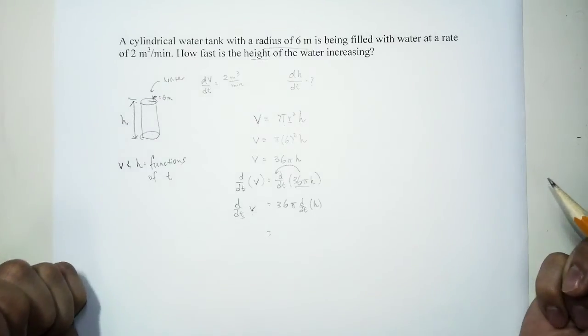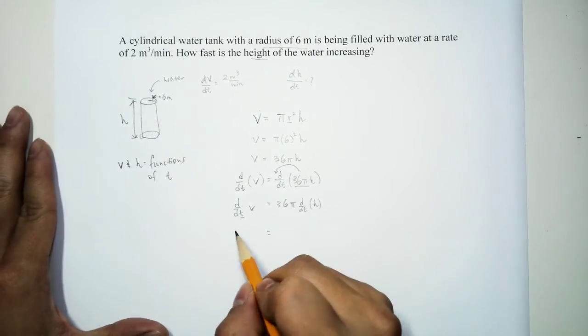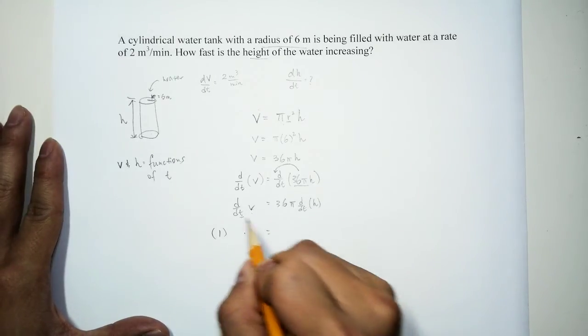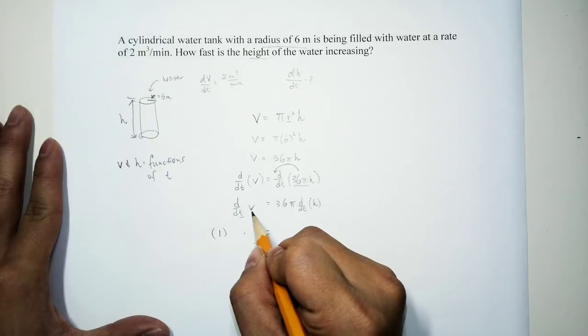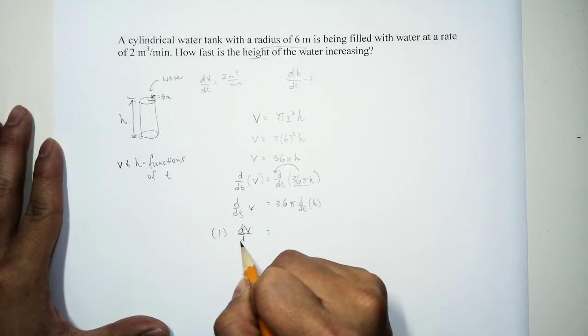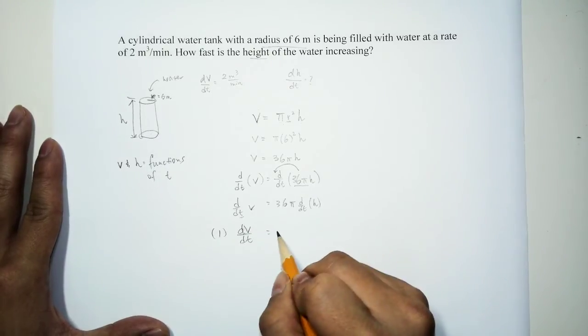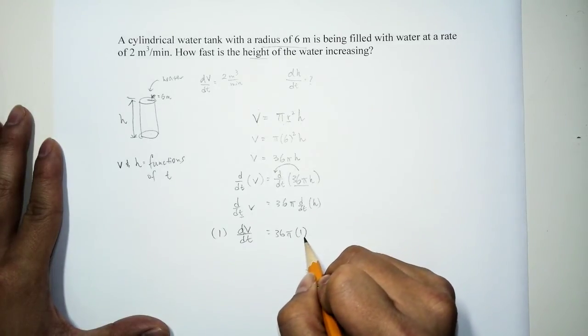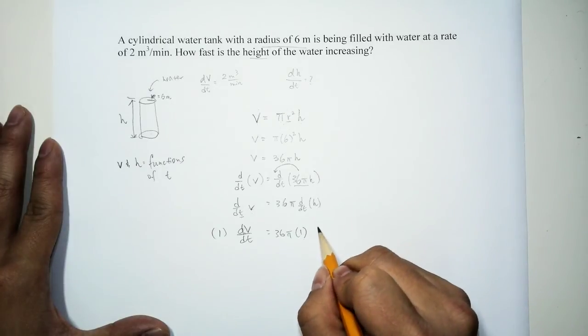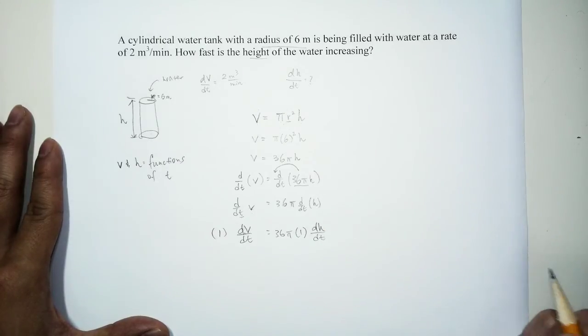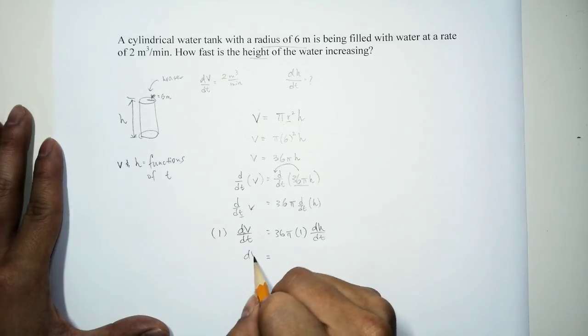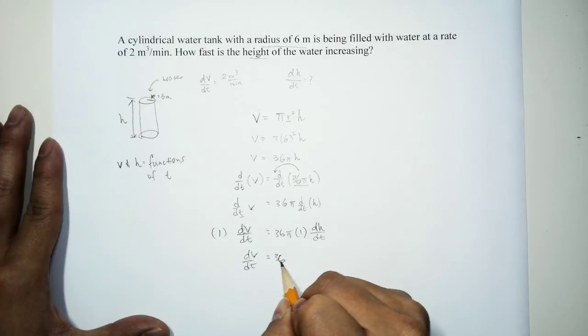So this is where we have to use implicit differentiation. So we will have, well, let's differentiate V. That's going to be 1, but we have to use chain rule since this is a function. So we have dV/dt. And right here, 36π, we keep it, differentiate the h. So we have 1 by itself, but h is a function. So we have dh/dt. All right. And so we basically have dV/dt is equal to 36π dh/dt.